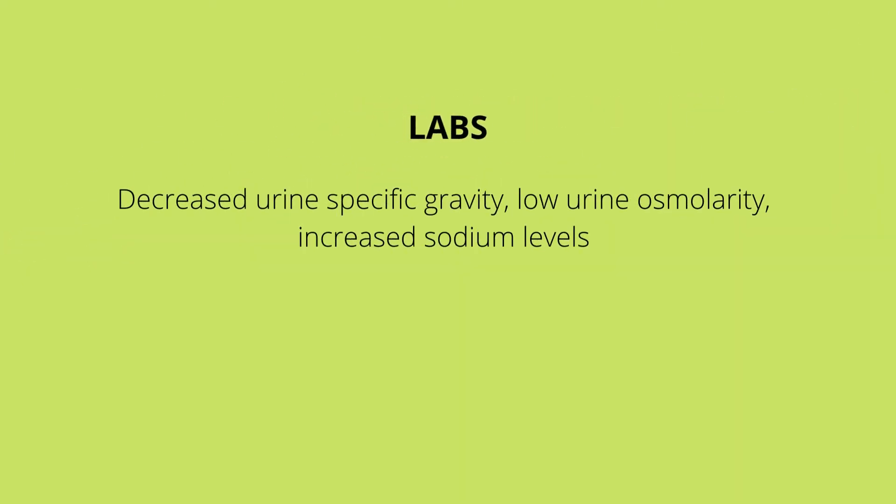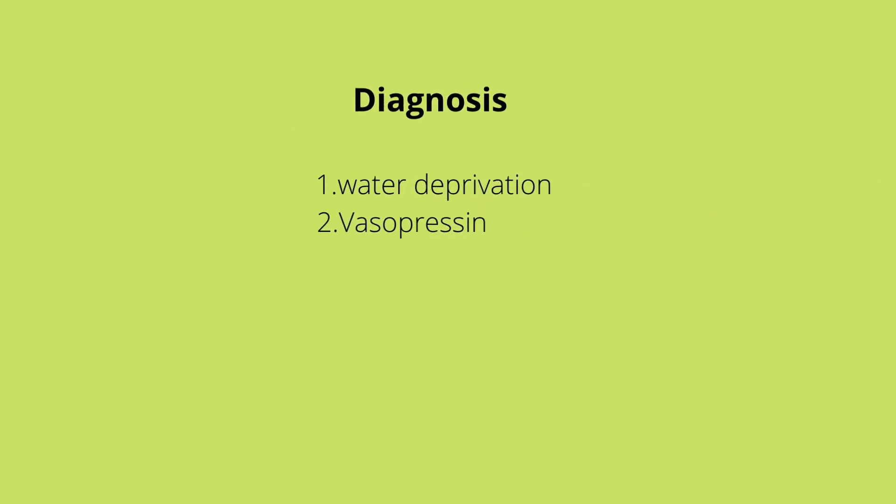Labs: Decreased urine specific gravity, that is below 1.005. Low urine osmolarity below 200. Decreased sodium level. Increased serum osmolarity above 300 and increased hypernatremia.